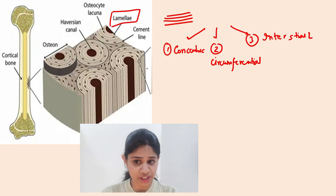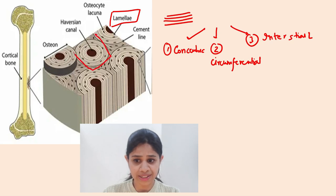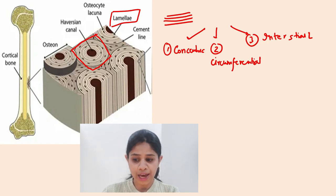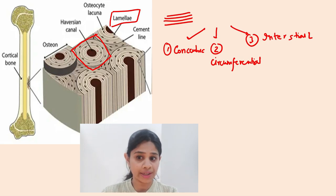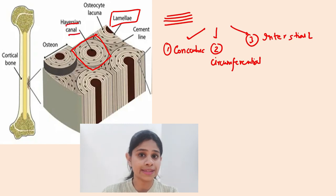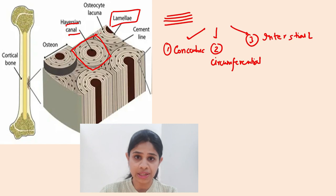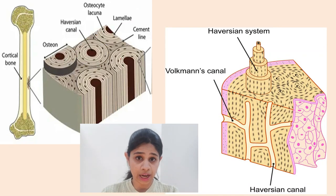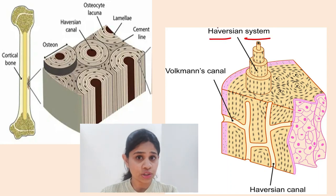The concentric lamellae form the major bulk of any cortical bone. The lamellae are arranged in a circular pattern surrounding a cavity or canal termed the Haversian canal, which carries blood vessels and nerve supply, providing nourishment to these lamellar structures. The Haversian canal along with the lamellae forms the Haversian system, and this whole assembly is termed an osteon.